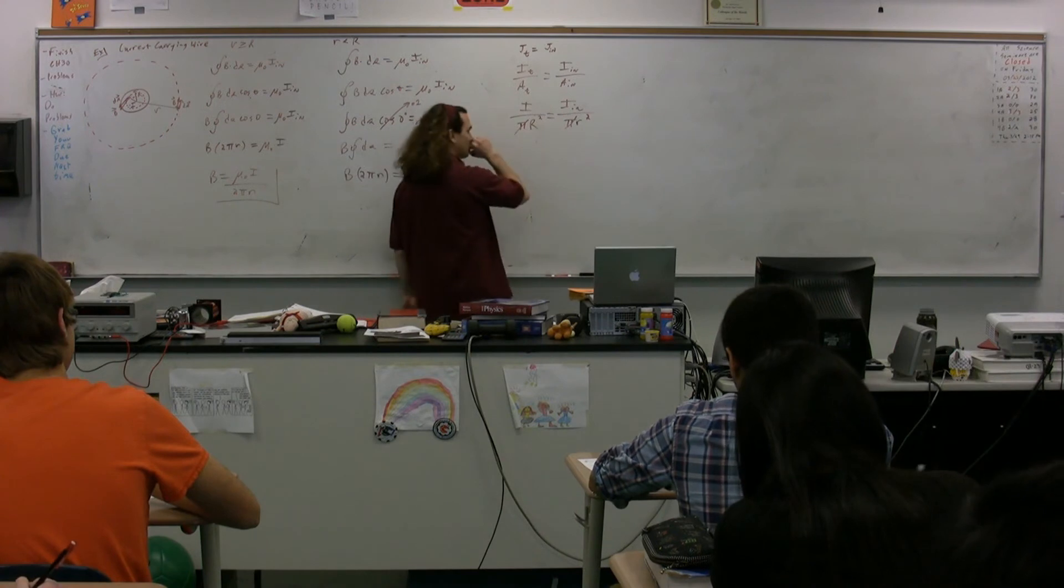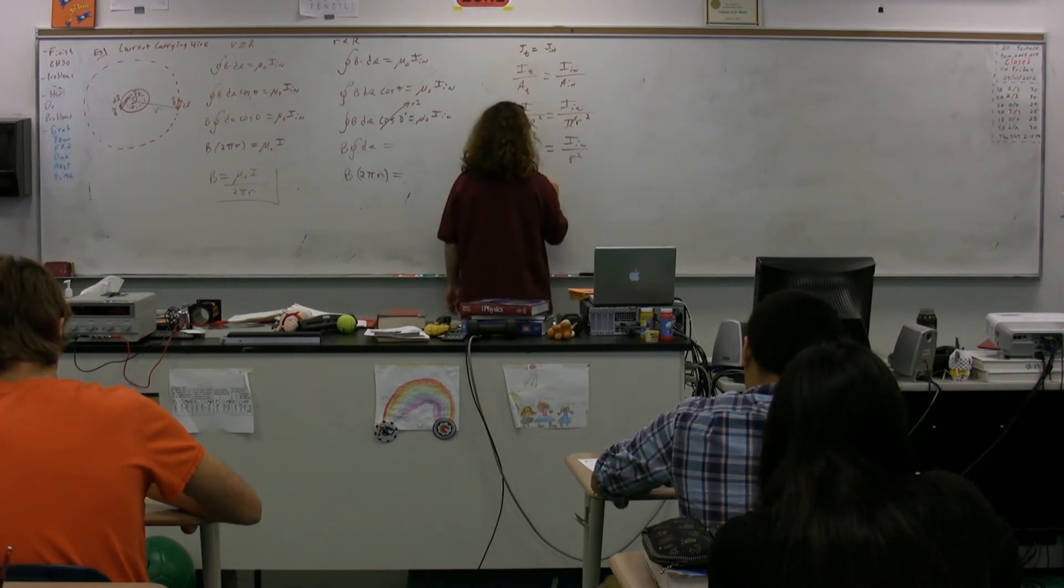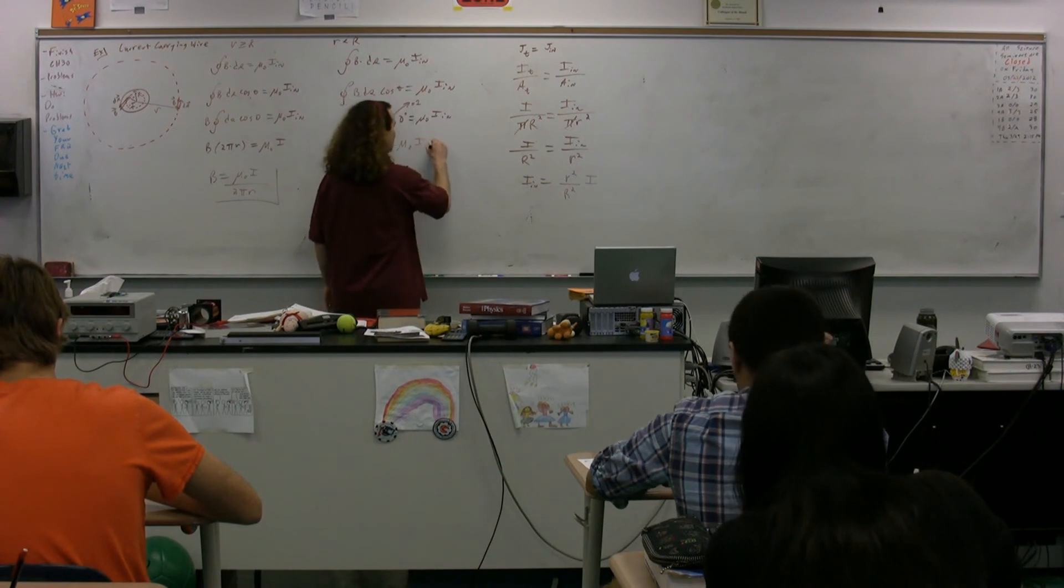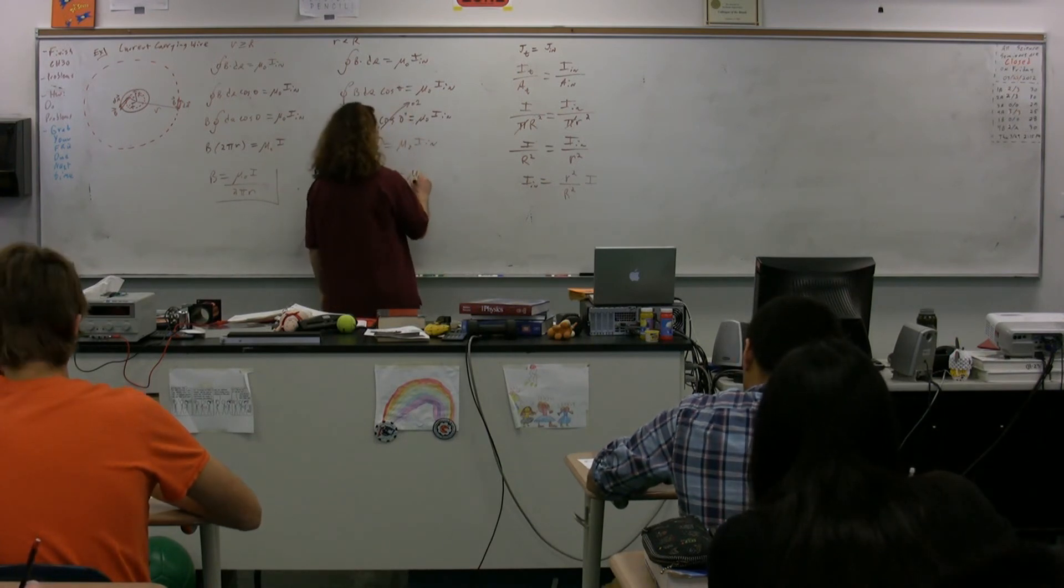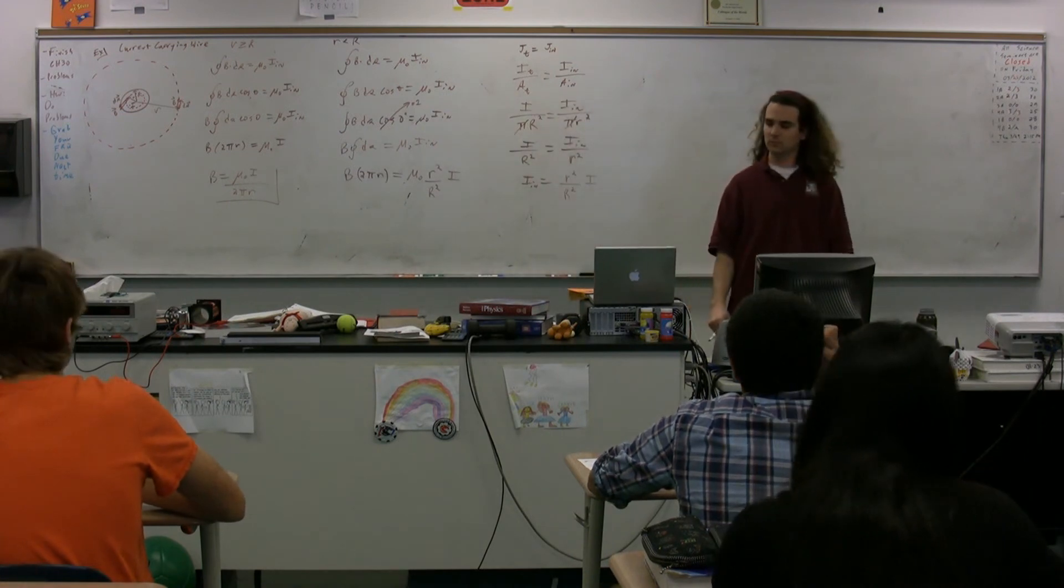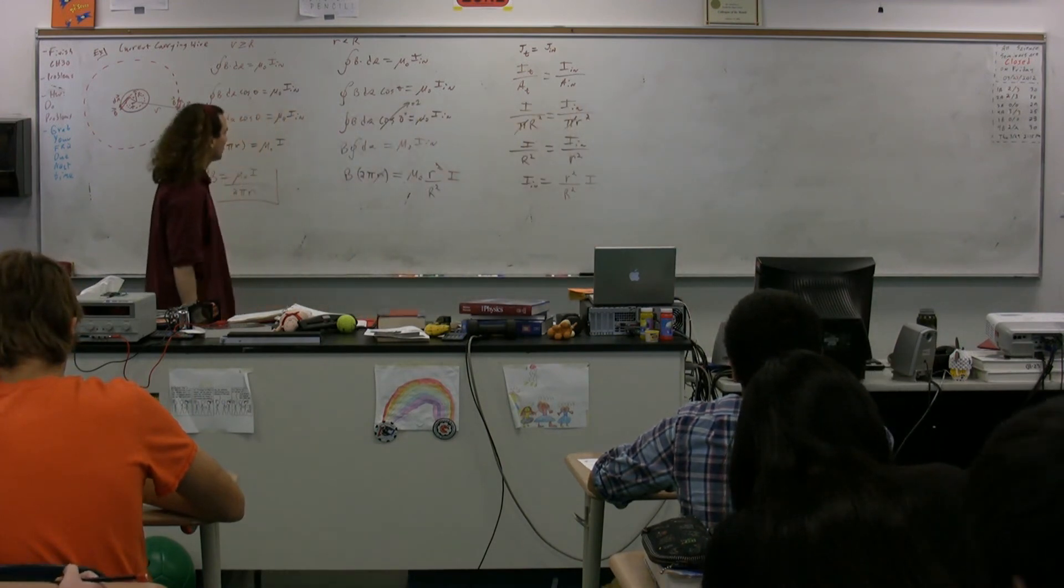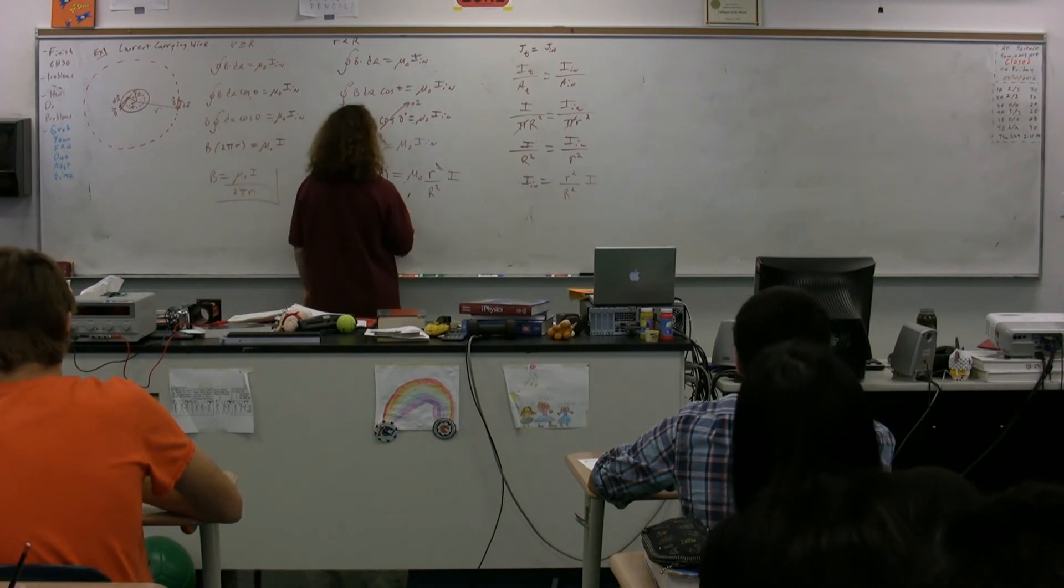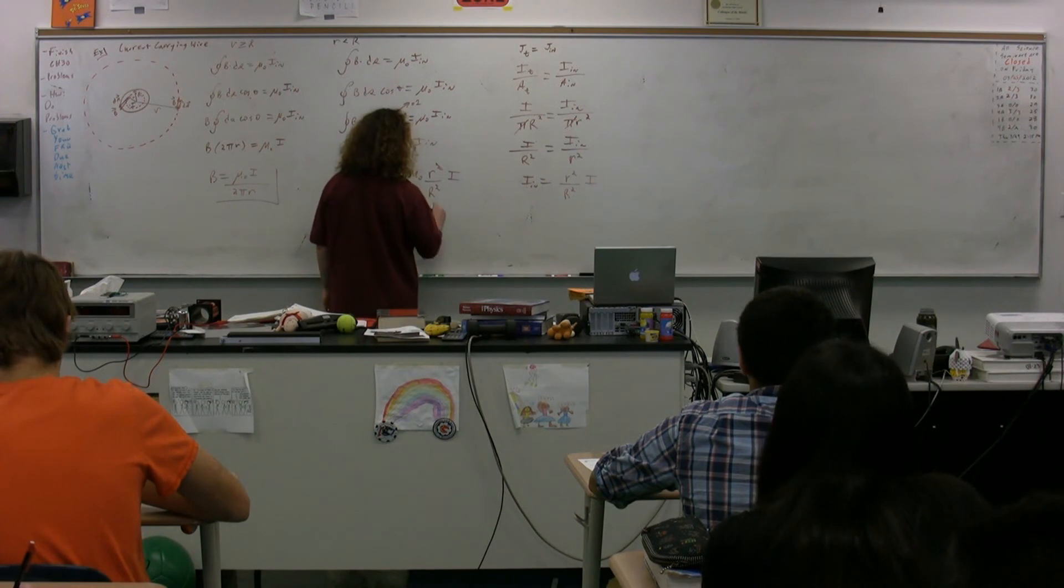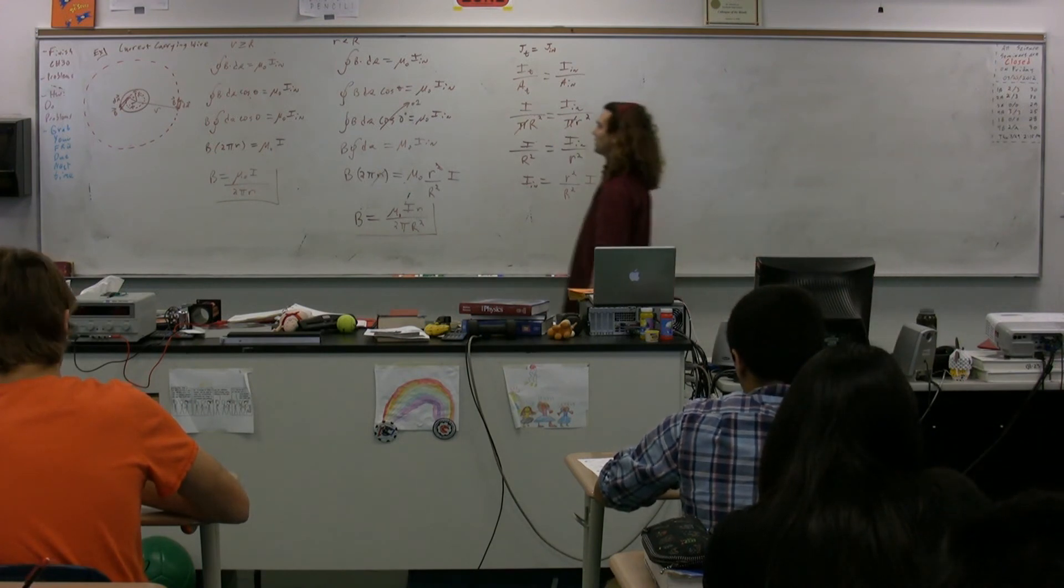Let's see. Our goal is to solve for the current inside, so current over big R squared equals current in over little r squared. So, the current inside the amperean loop is equal to little r squared over big R squared times the total current. So, we can come back over here, and we can substitute in for the current on the inside of the amperean loop. We have mu naught times little r squared over big R squared times current. All right, so we can get rid of little r and the magnetic field is going to equal mu naught i times little r all over 2 pi times big R squared.